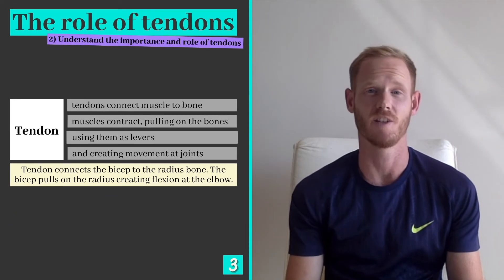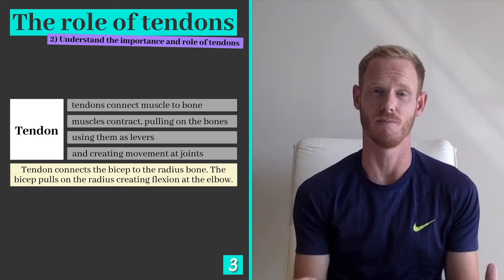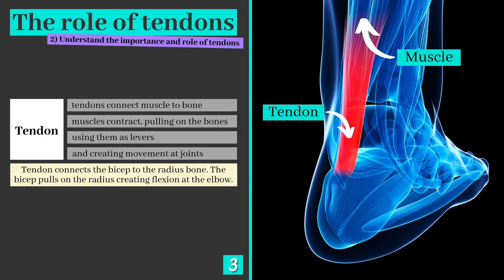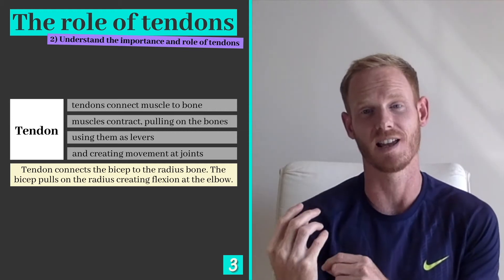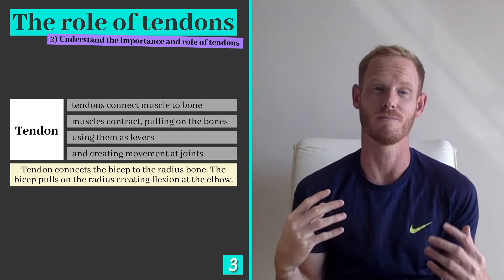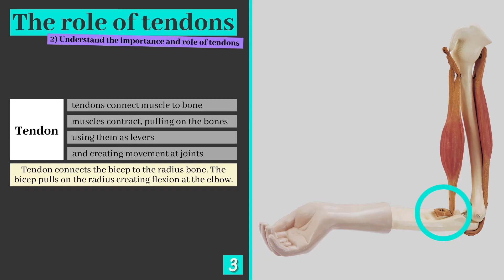Our second learning objective is to understand the importance and role of tendons in relation to the muscles. As you'll know if you've watched my first lesson on the skeleton and its functions, tendons connect muscle to bone. When a muscle contracts it pulls on the tendon, which pulls on the bone and creates movement at the joint. In this example, a tendon connects the bicep muscle to the radius in the forearm. As the muscle shortens, the forearm is pulled upwards and flexion occurs at the elbow.